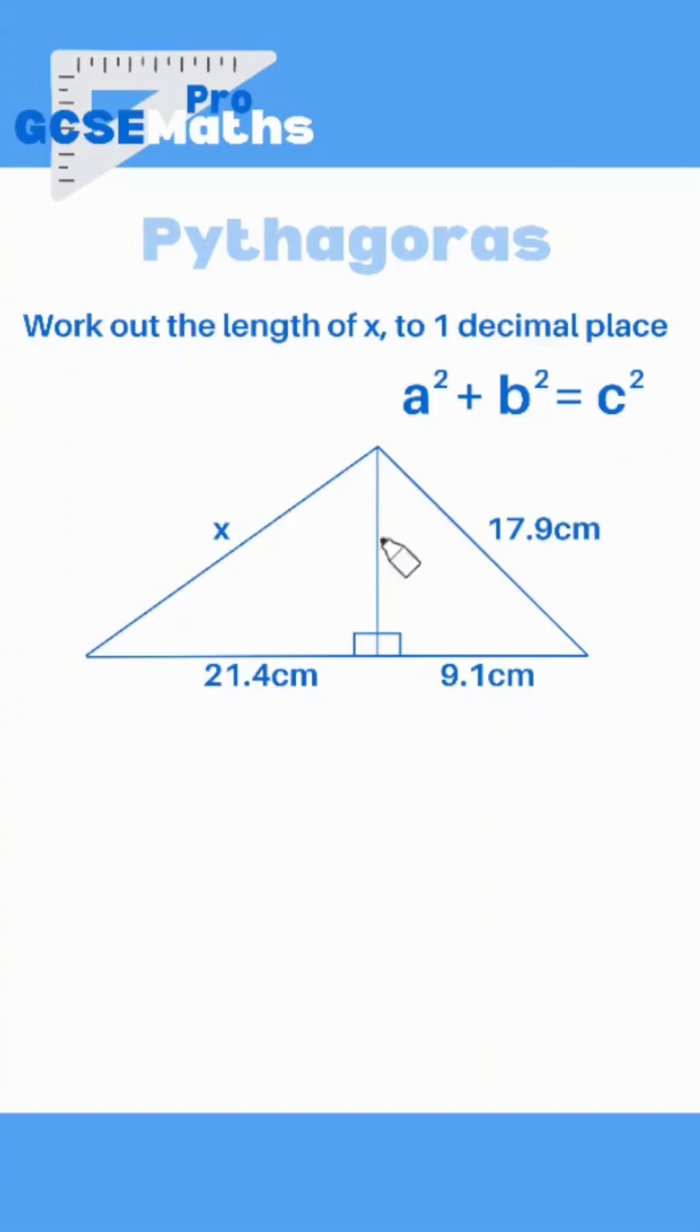That one does actually have two sides and the missing side is actually shared with our left-hand triangle. First of all we label the sides correctly. C always has to be the hypotenuse. A and B doesn't really matter which is which. We are now going to substitute in those numbers into the formula.